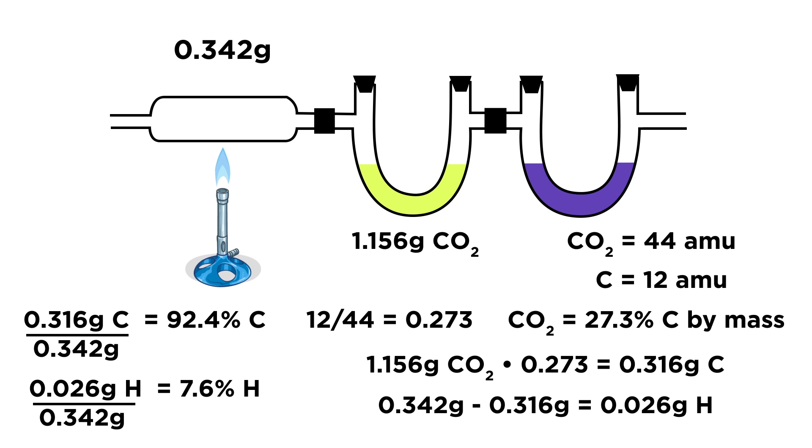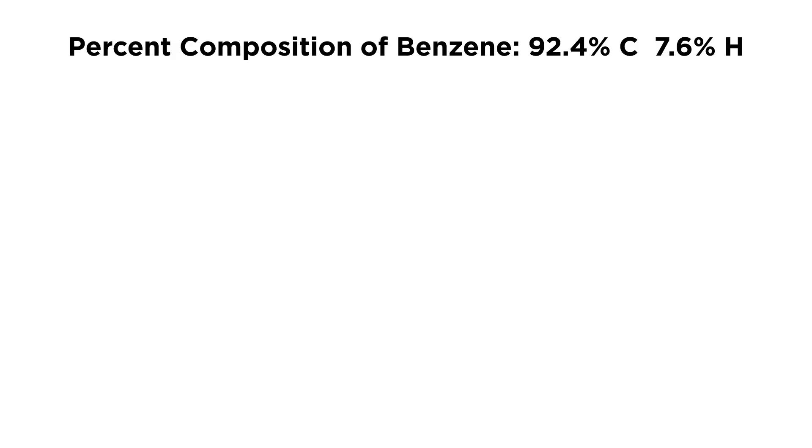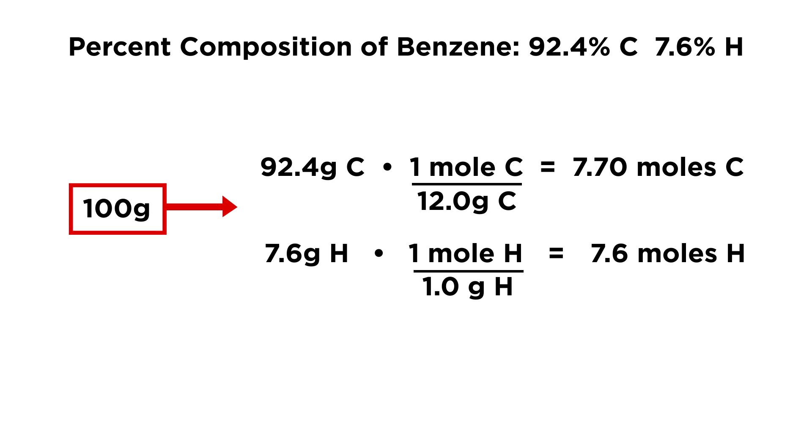Let's go a step further and find the empirical formula. If we pretend we have 100 grams of the hydrocarbon, 92.4 grams would be carbon and 7.6 grams would be hydrogen. Using their atomic masses to convert to moles, we get roughly 7.6 moles of each, which indicates a one-to-one ratio. Therefore the empirical formula of benzene is CH. This means that there is the same number of carbon atoms as hydrogen atoms in the molecule.